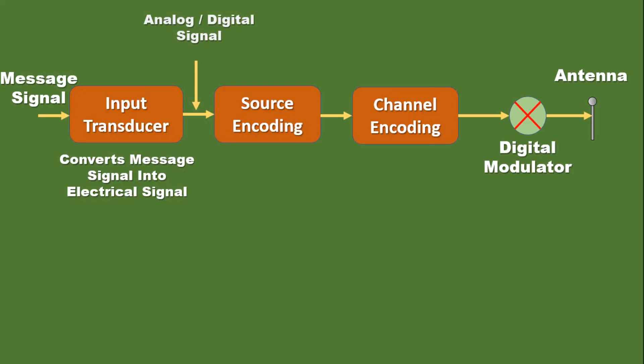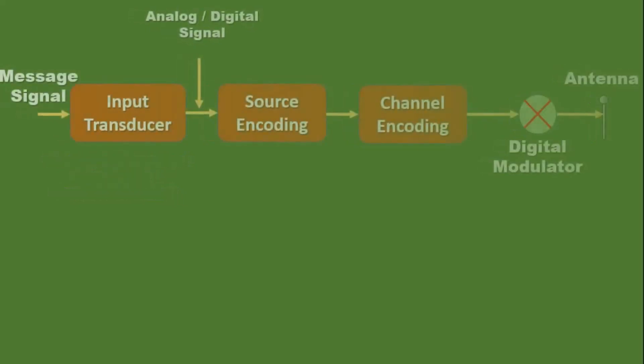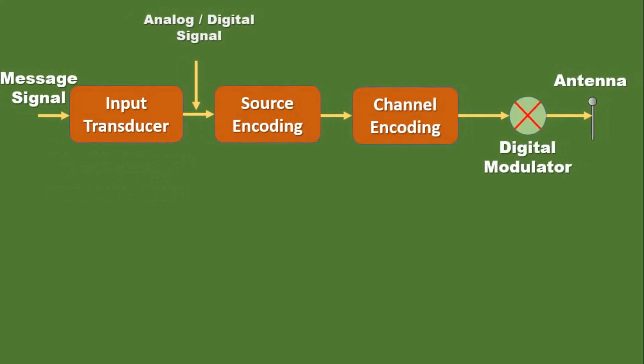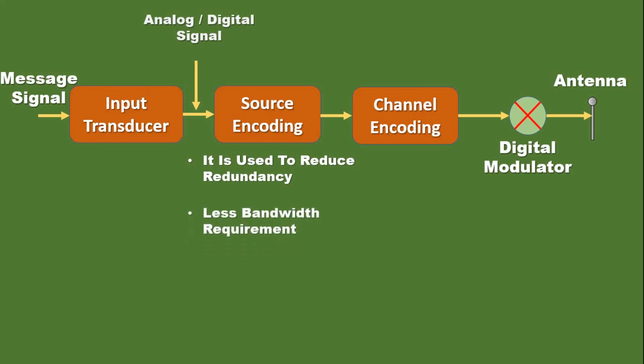The next block is the source encoder. Basically, the source encoder compresses the data into the minimum number of bits. This process helps in the effective utilization of bandwidth. It removes redundant bits — meaning unnecessary excess bits. The basic task of source encoding is to reduce redundancy and utilize bandwidth effectively. For digital data, we can also apply data compression.